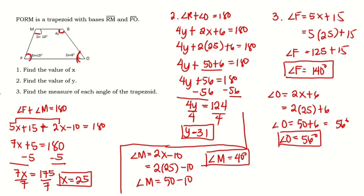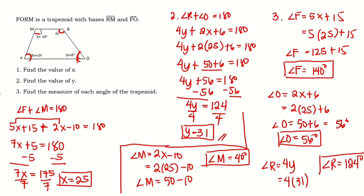Lastly, to get the measure of angle R: angle R equals 4y. The value of y is 31, so 4 times 31. The measure of angle R is 124 degrees. So that's how we solve problems involving trapezoids.